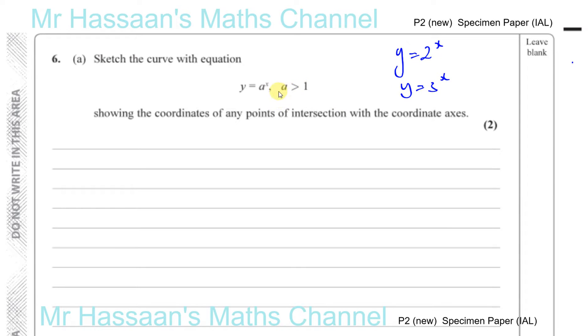If a was less than 1, then it would change, like y equals a half to the power of x, it would have a different shape. So y equals a to the power of x would have some sort of shape like this. It goes through 1 on the y axis. It always goes through 1 on the y axis, never hits the x axis.